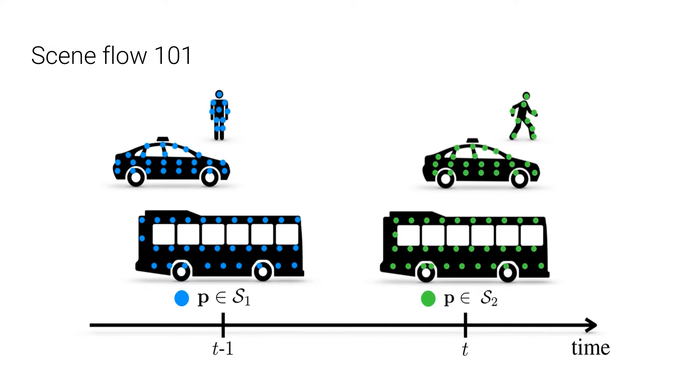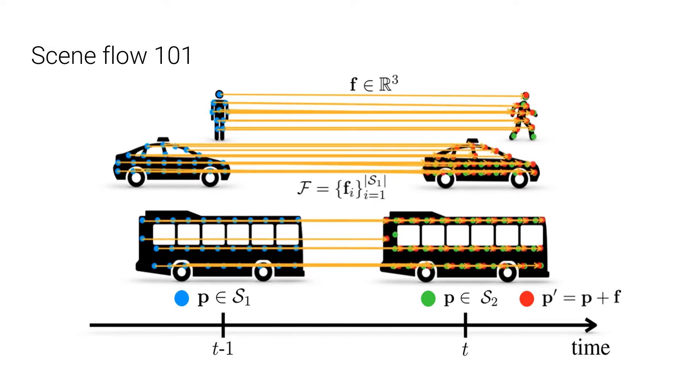we assemble another point cloud of the scene as S2. Then for a specific point in S1, we want to find the translational vector F that best transforms the point to its corresponding point in S2. The collection of all the translational vectors is the scene flow F.